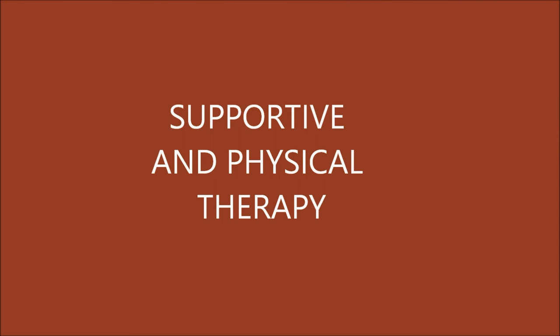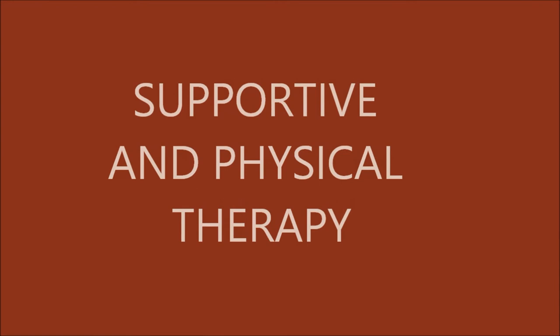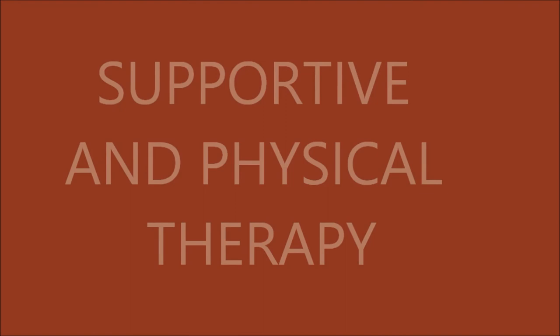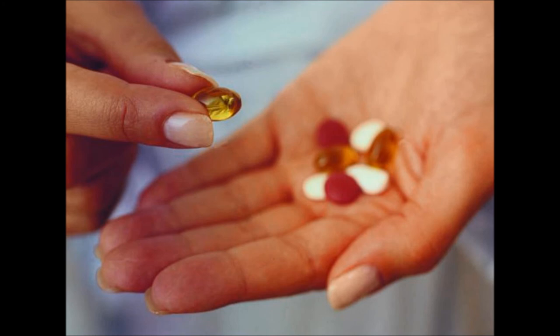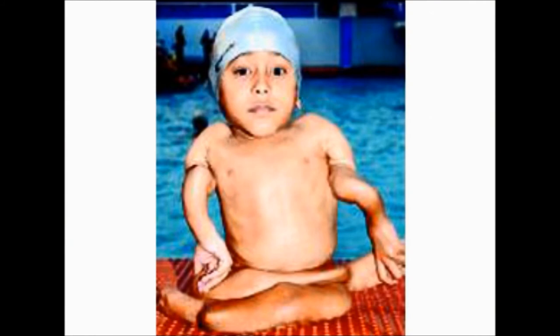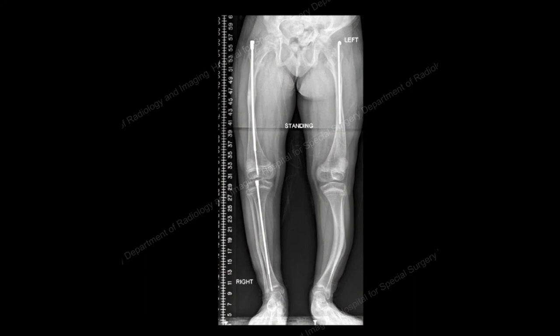Treatment for osteogenesis imperfecta: there is no cure for OI, but certain treatments can reduce the symptoms. Supportive therapy can help decrease fractures and disabilities, help with independent living, maintain overall health, and is unique to each individual. Physical and occupational therapies help improve the ability to move, prevent fractures, and increase muscle strength. Fractures are not treated differently from those of a person without OI. Bisphosphonates is a new medicine often used to help with bone formation and decrease the need for surgery. Low impact exercises can help keep muscles strong and maintain bone health. Surgery to place metal rods into the legs may be used to strengthen the bone and reduce the risk of fracture.